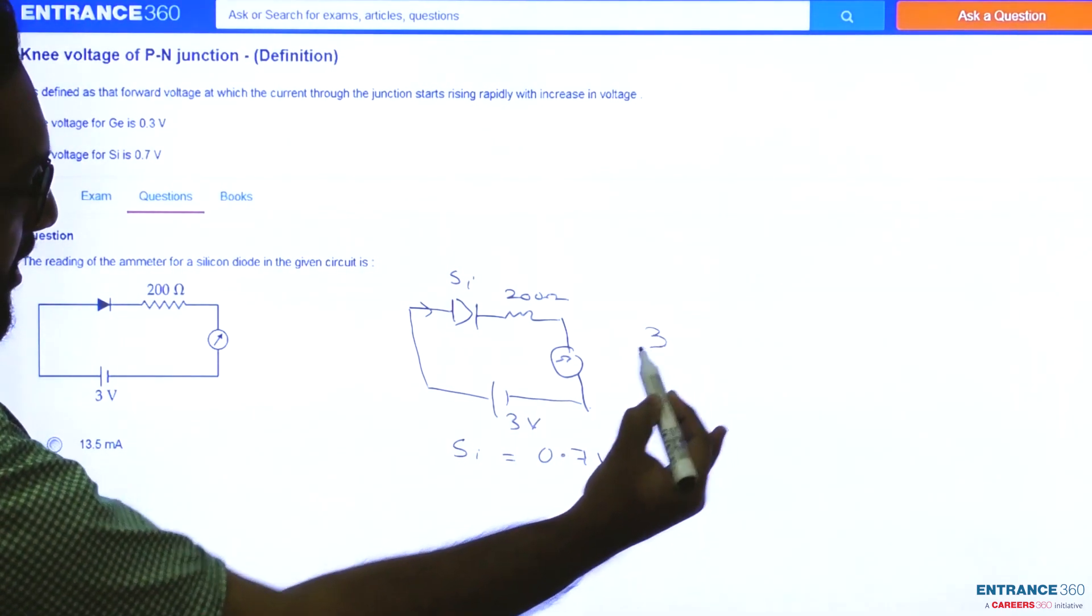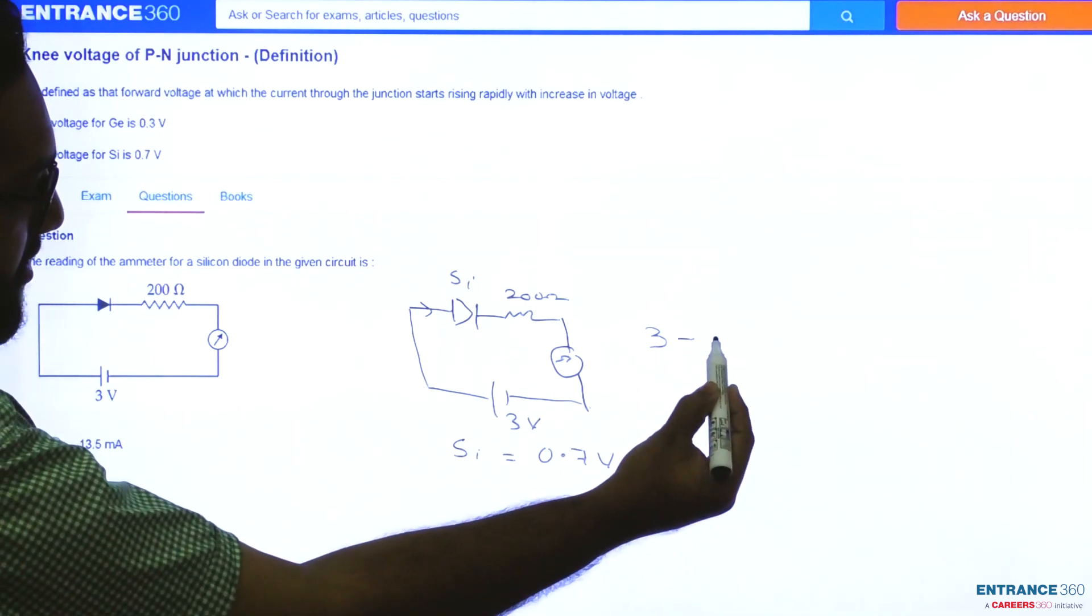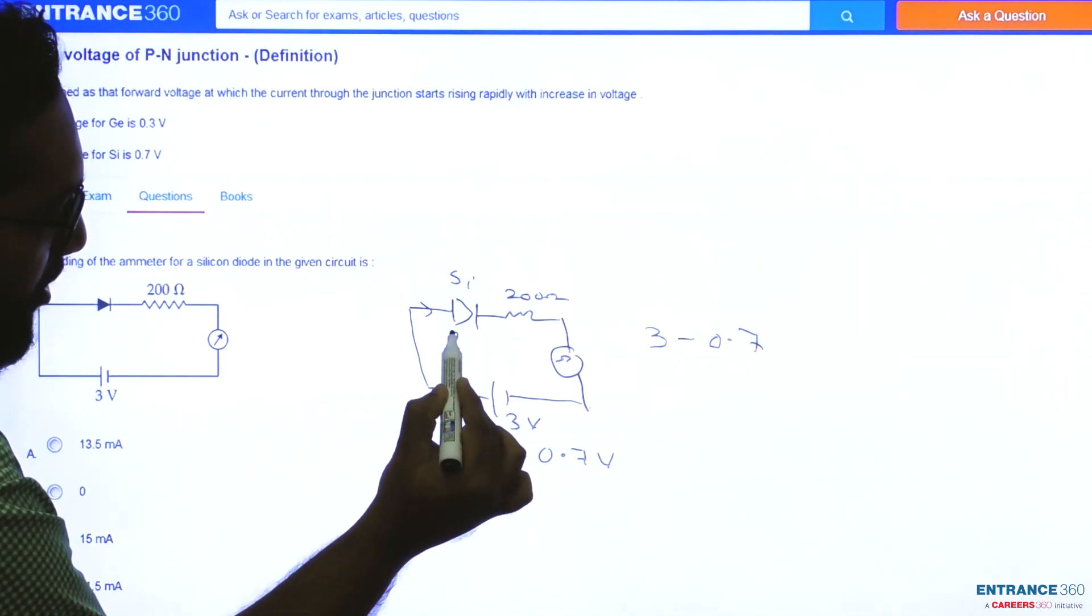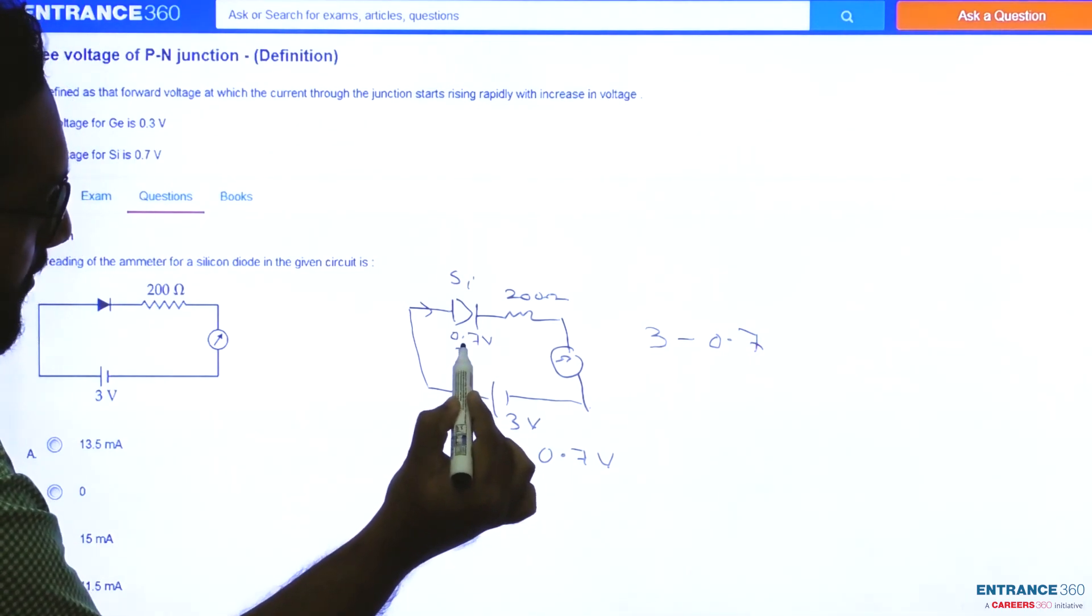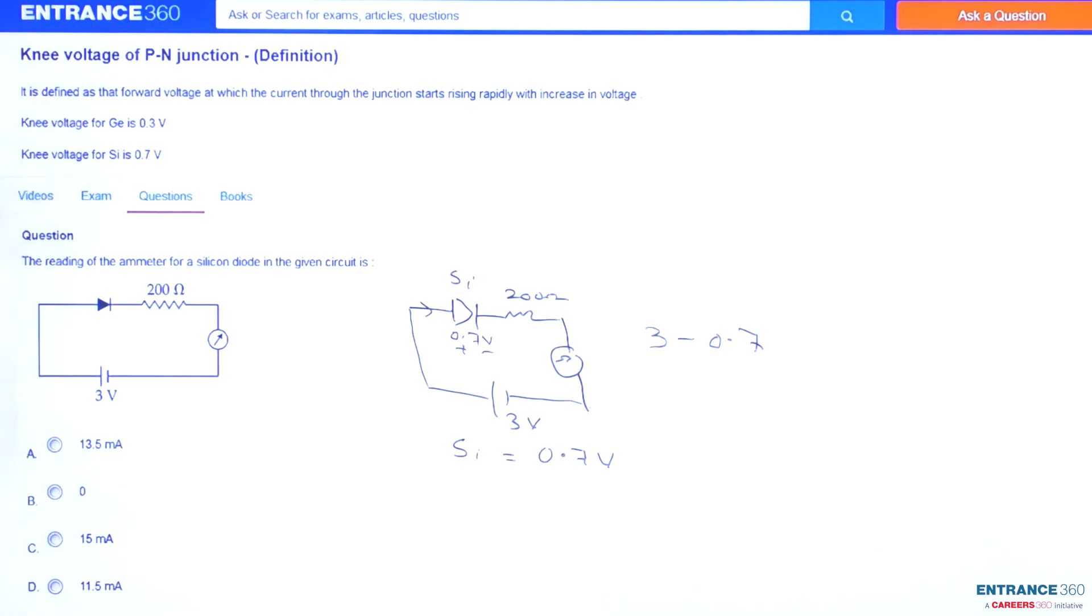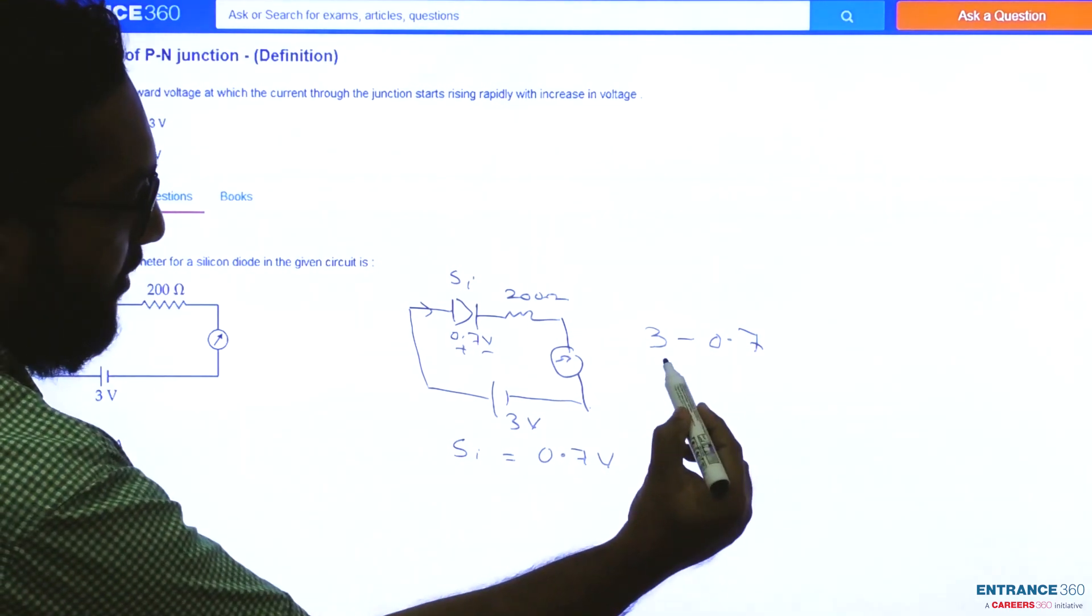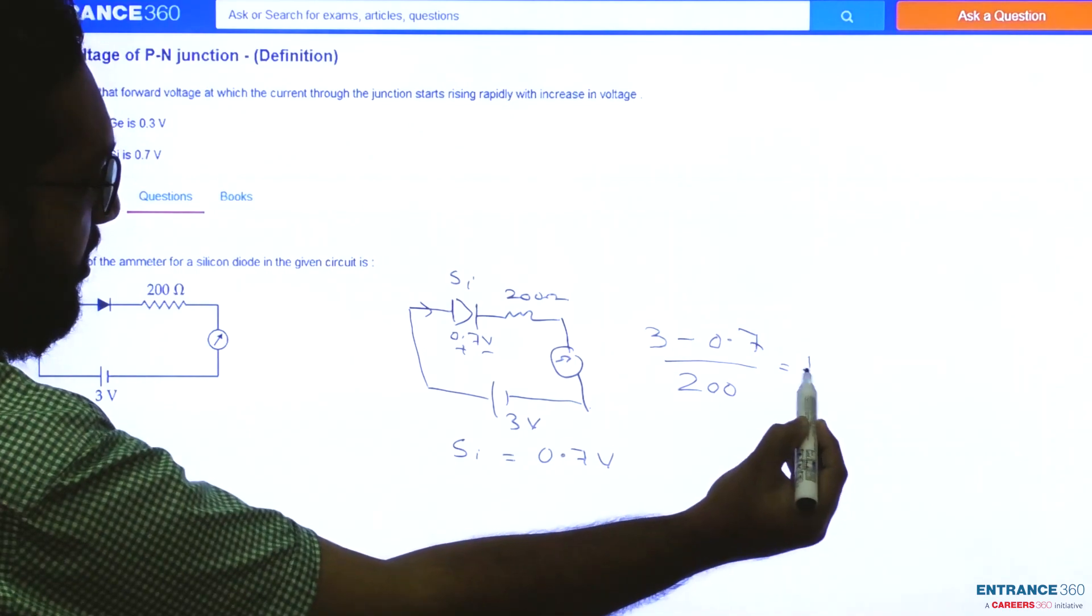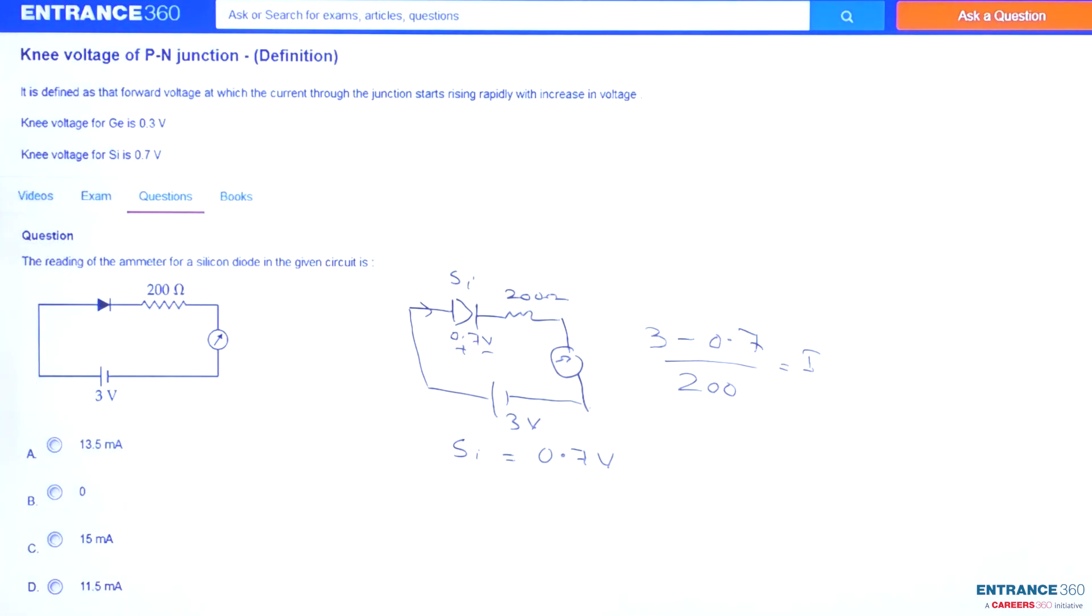We can write: 3 minus 0.7 (because the cutting voltage is 0.7 volts) divided by 200 equals current I. So upon calculation, it will be 2.3